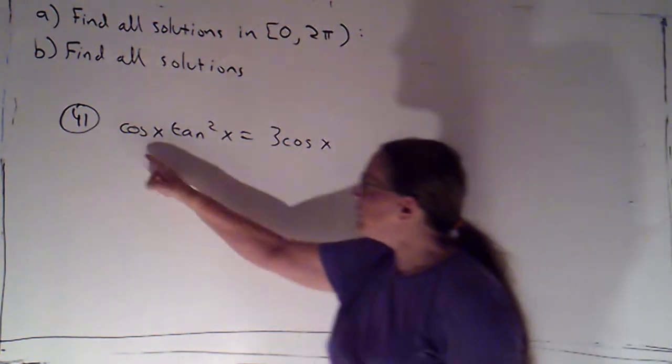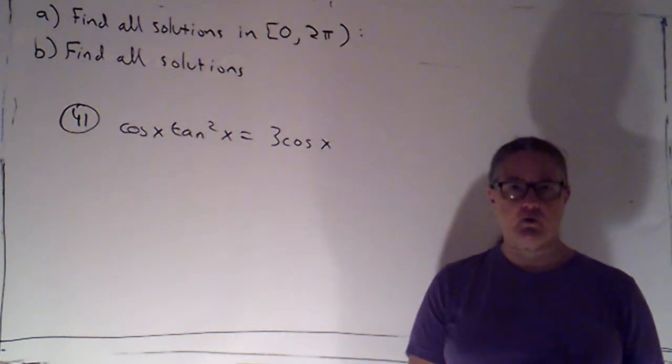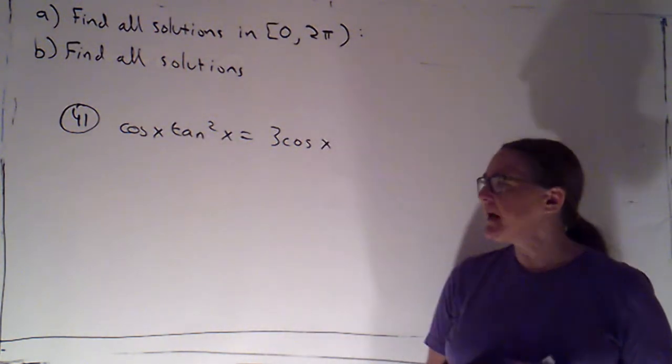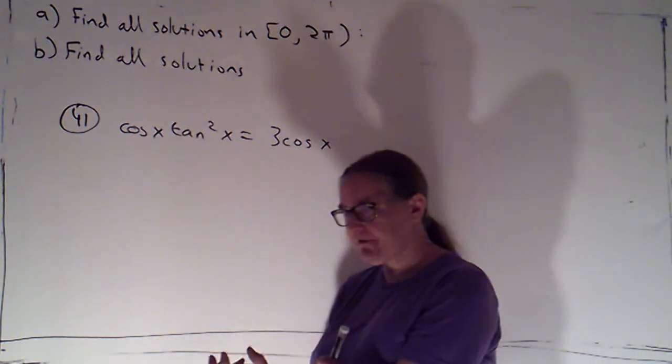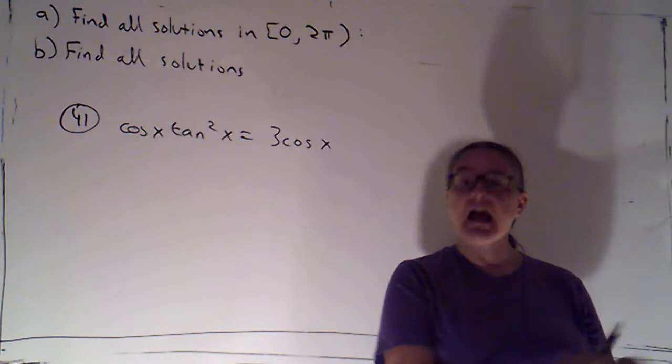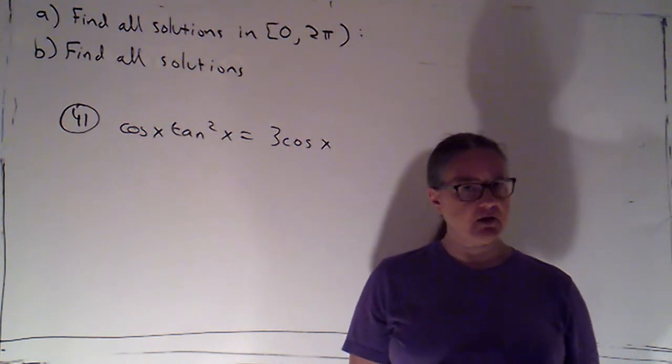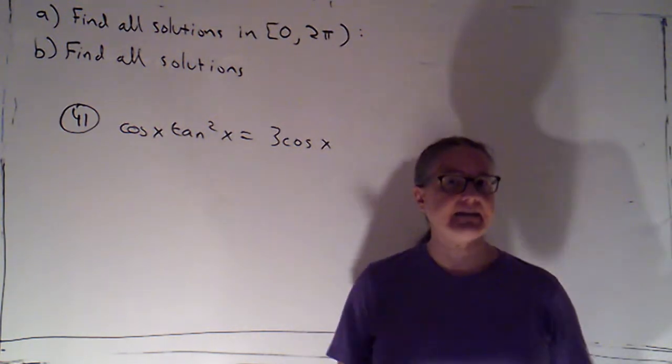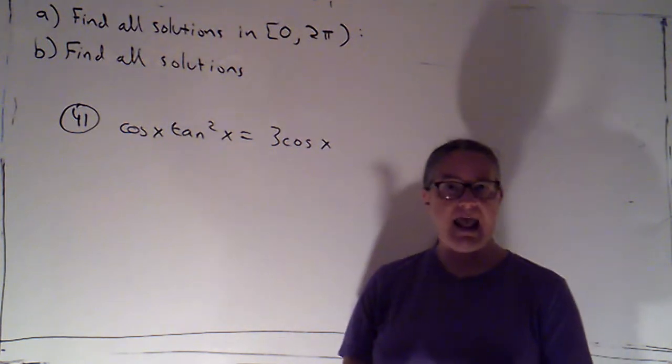Second, this one looks a little bit tougher because I've got two different trig functions. And I want to be on the lookout. If I have two different trig functions, or sometimes we might have two different angles, sometimes I'm going to need to use a trig identity to try to get it down to just one trig function and one angle.